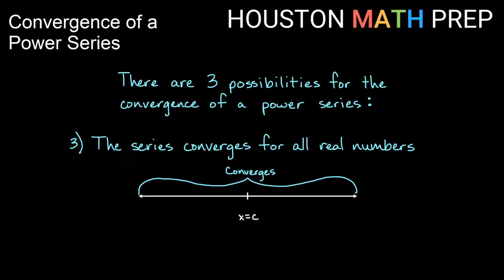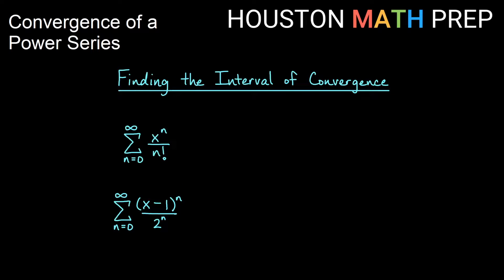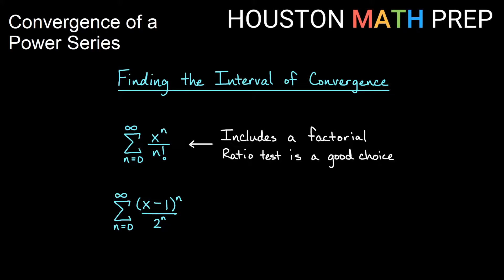Now, how we'll go about finding the interval of convergence — there are two super common tests we'll use. They're very similar and nice to use with power series. One is the ratio test; oftentimes with power series we get expressions with factorials in our coefficients, so if we have a factorial the ratio test is a good choice for finding the interval of convergence.